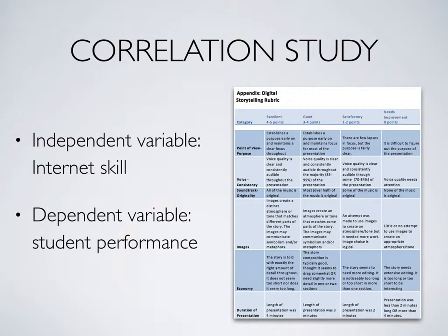The student's performance in each of these categories will be rated excellent, good, satisfactory, and needs improvement, and a point value will be applied. The instructors will be able to assign an overall score of each student's performance based on the results of the categories.